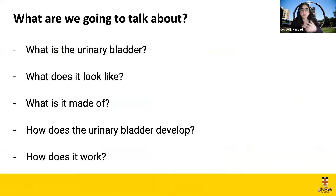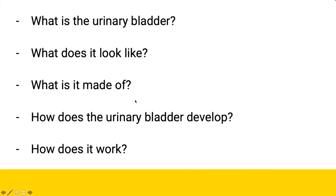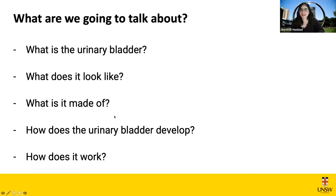Then we'll look at what the bladder is made of — under the microscope, what kind of cells do we see, how does that relate to the function of the bladder, and is it well designed? After that we'll talk about how the urinary bladder actually develops — the branch of anatomy we call embryology, which covers development of both the embryo and the fetus. This can be a bit overwhelming, but hopefully I've made it easy to understand tonight.